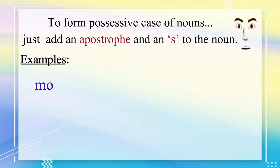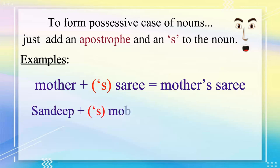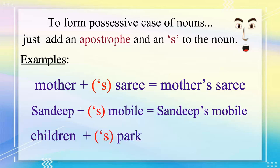Let's look at some examples. Mother apostrophe S, Saree — is Mother's Saree. Sandeep apostrophe S, Mobile — is Sandeep's Mobile. Children apostrophe S, Park — is Children's Park.